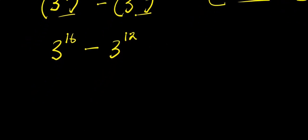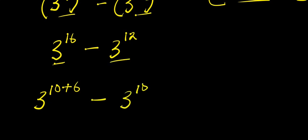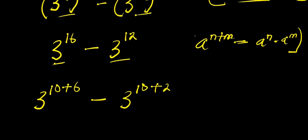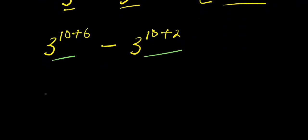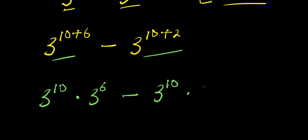From here I can express 3 to the power of 16 as 3 to the power of 10 plus 6, minus 3 to the power of 10 plus 2. Now remember a to the power of n plus m equals a to the power of n times a to the power of m. I apply this identity right here and here. So we have 3 to the power of 10 times 3 to the power of 6, minus 3 to the power of 10 times 3 to the power of 2.